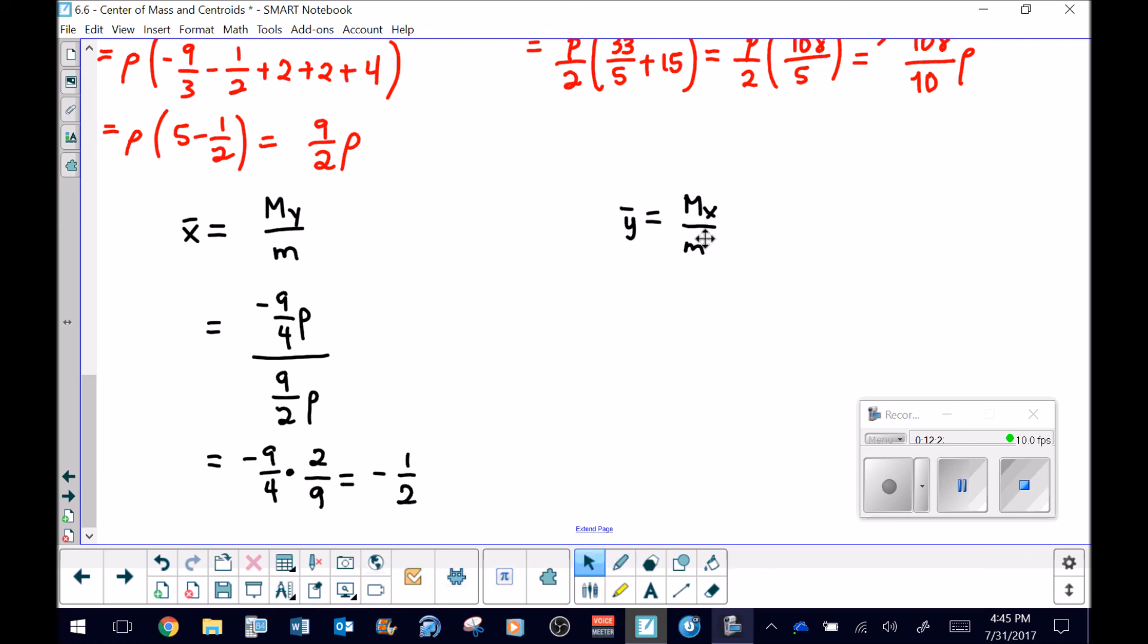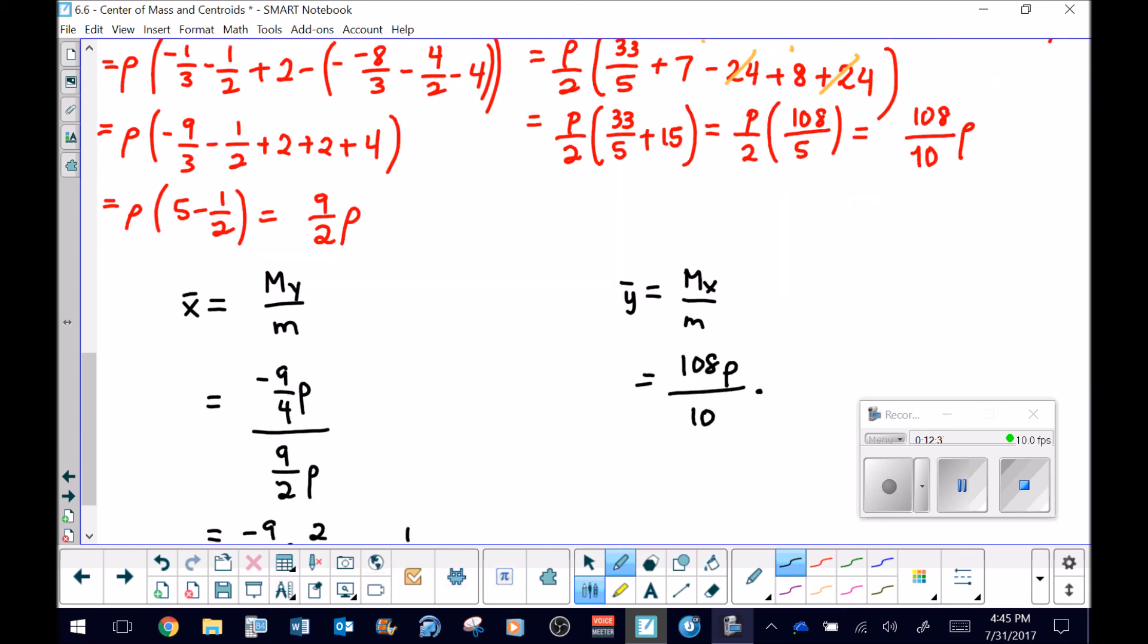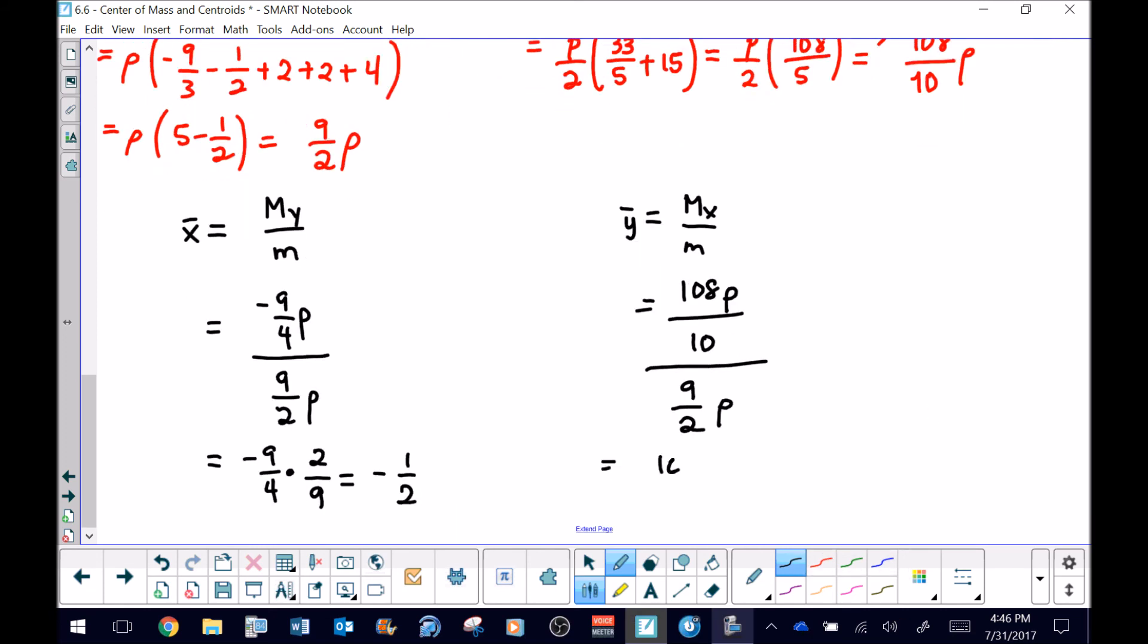Let's calculate y-bar, which would be our moment about the x-axis, which was the 108 ρ over 10. We're going to divide that by our nine-halves ρ, but we'll multiply by the reciprocal. The ρs again will cancel, so I'm going to elect not to write those. The 108 over 9 would reduce to a 12, and the 2 over 10 would reduce to a 5. We've got it. We have got our ordered pair, our balancing point for this problem. It would be the ordered pair negative half and 12 fifths, or another way to think of the 12 fifths might be as 2.4.